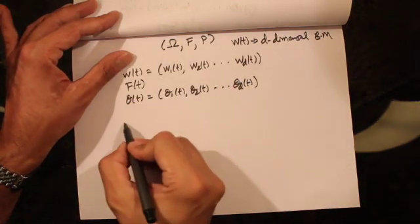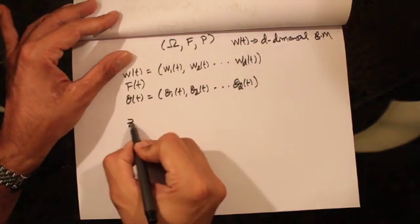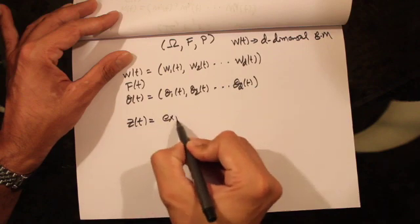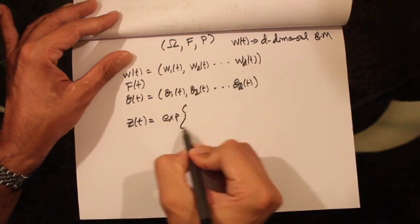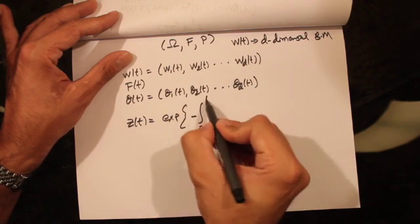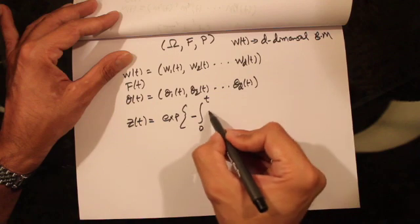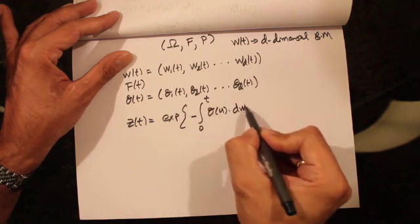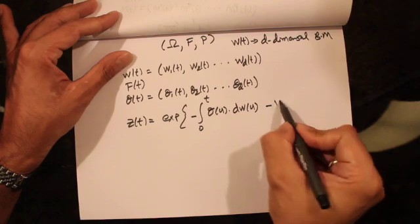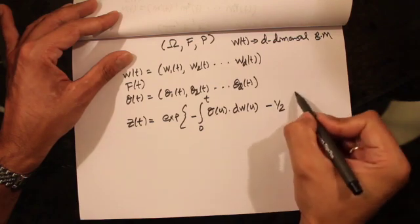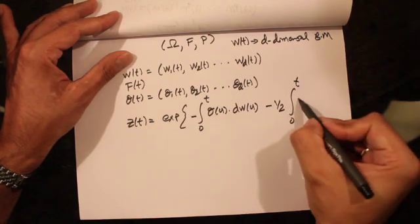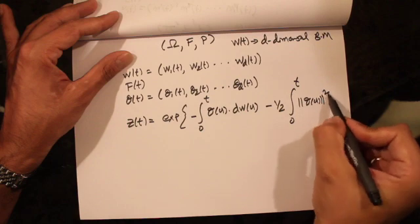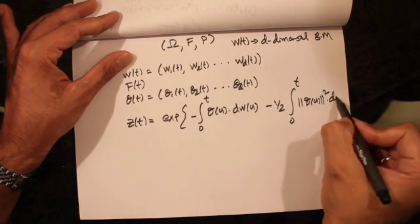Now let's define a random variable Z(t), which is the exponential function of minus the integral from 0 to t of theta(u) · dW(u) minus one-half the integral from 0 to t of the norm of theta(u) squared du.